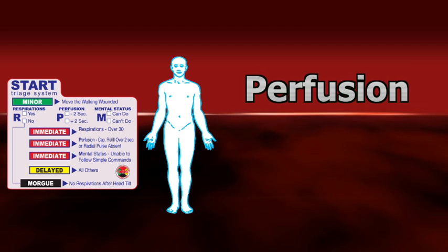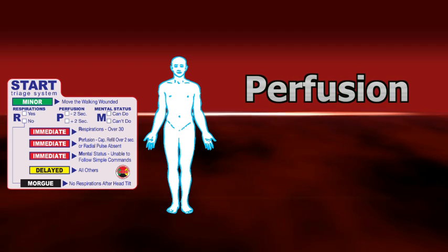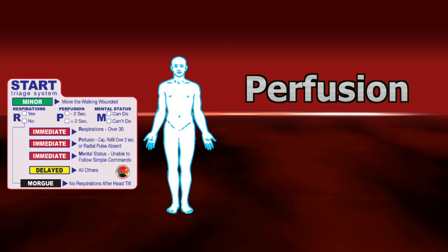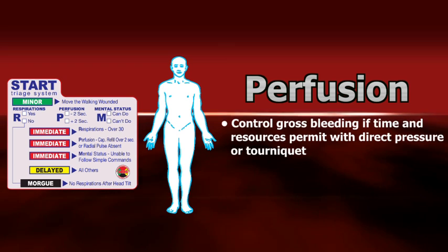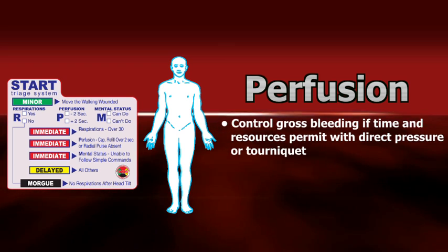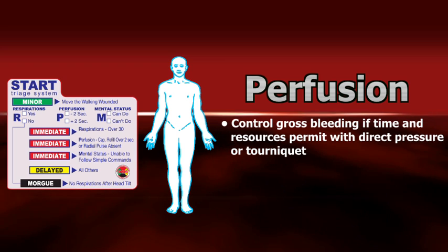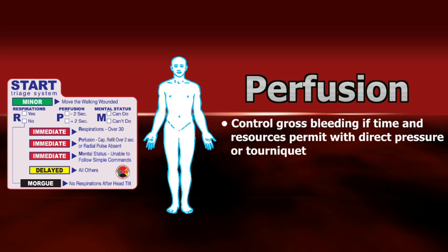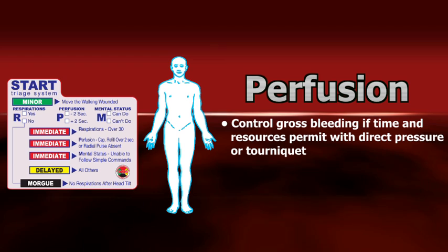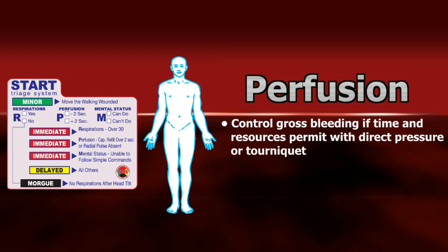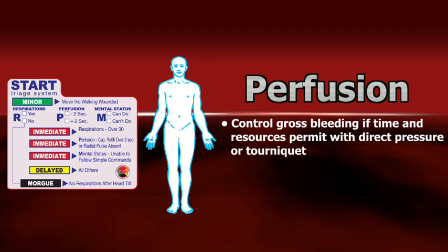Perfusion: if the patient is breathing effectively at a rate less than 30 times per minute, the triage team member should next evaluate the perfusion status of the patient. Gross bleeding that can be quickly controlled with direct pressure should be immediately addressed. A bystander can assist in maintaining pressure until more first responders are available in the triage area to properly address the injury.